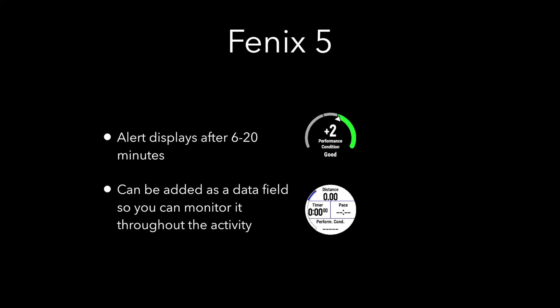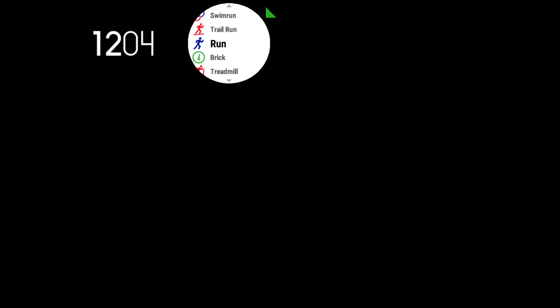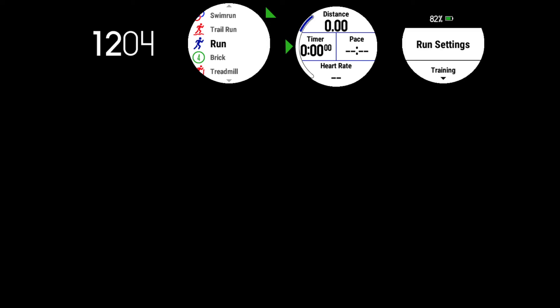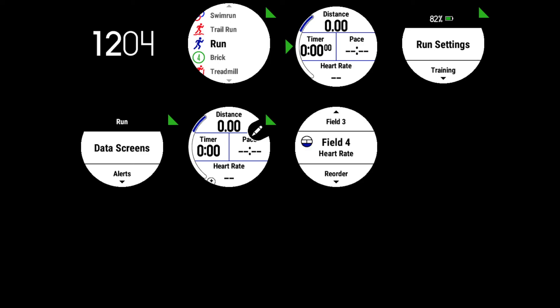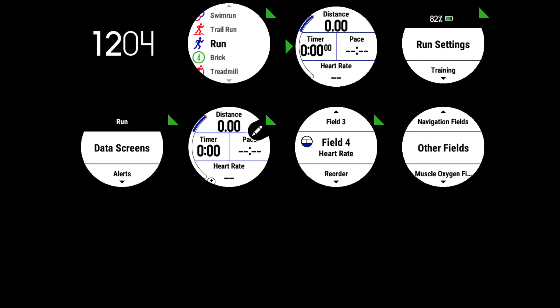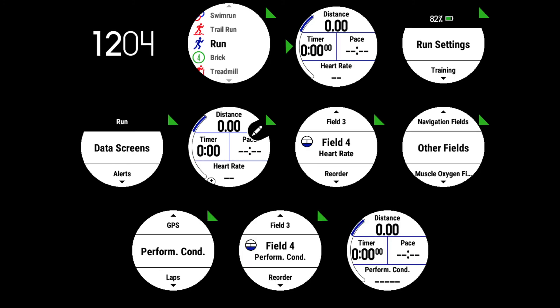As mentioned, you get an alert on the watch after 6 to 20 minutes, but the usefulness of this data increases if you add it as a data field so you can monitor it during the activity. To do that - using screenshots from my watch - you go into the activities page, then press and hold the middle button to go into run settings, select data screens, then go and edit. In this case I want to change my heart rate field for performance condition. Select heart rate and you find performance condition within the menu under 'other fields'. Select that, confirm, and you will end up with performance condition in your data field for run activity.